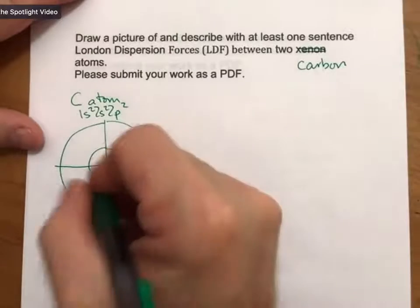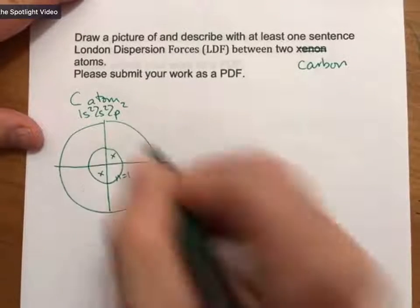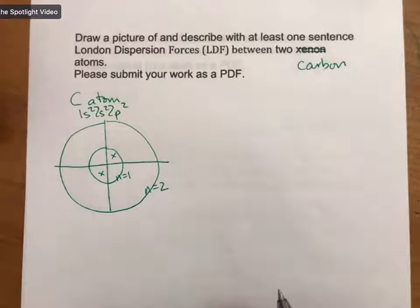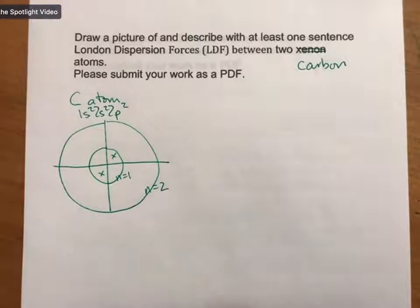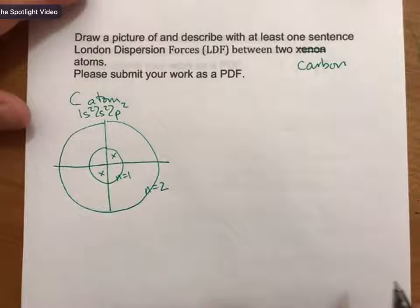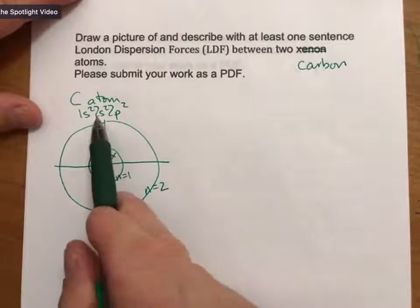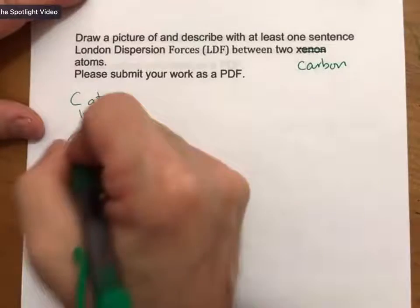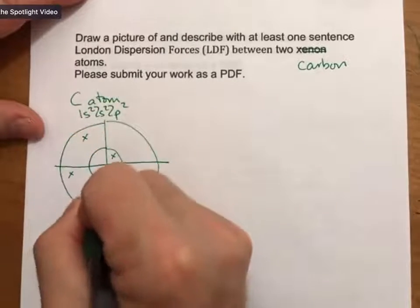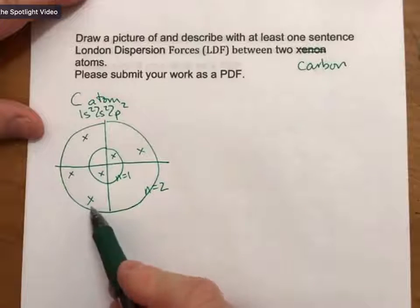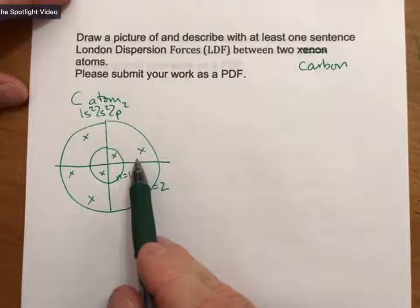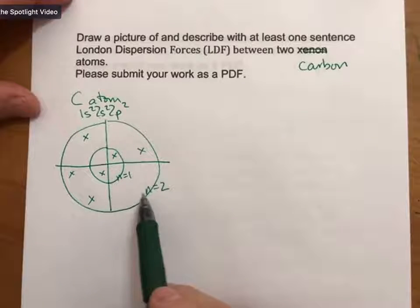And so I'm going to draw two electrons in the n equals one. And again, just keep in mind, this is a very schematic picture, but I am hopeful that it will give you an idea about how intermolecular forces work. And then there are four electrons in the n equals two. And all I'm going to do is I'm going to draw three of them on one side. I'm not even drawing the S's and the P's. You can and still do this, but I think it's simpler if you just draw them as n equals one and n equals two.